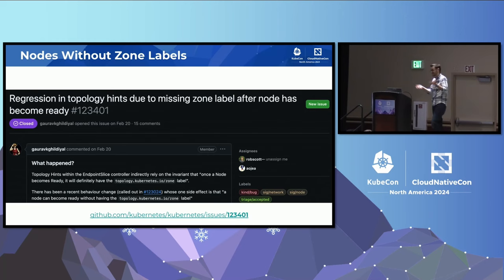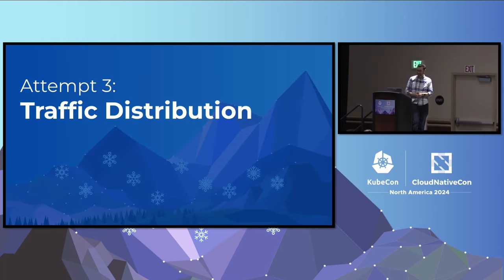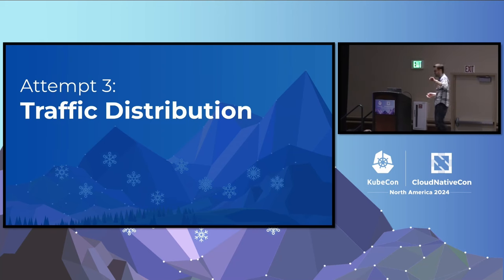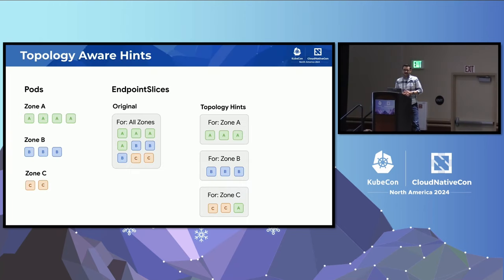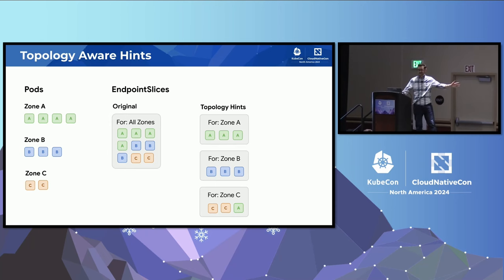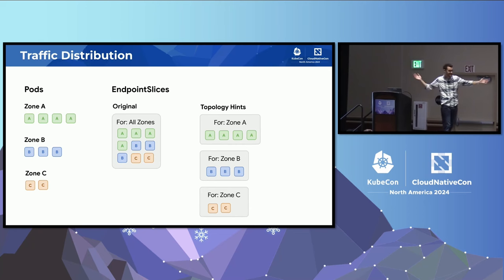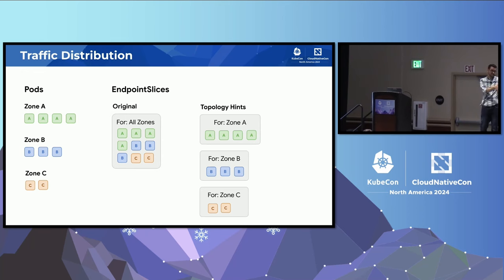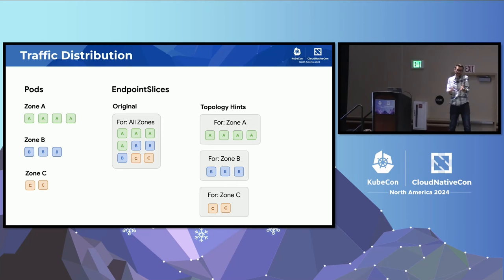Any time you have a new node come up without a zone label in some edge cases, all your topology-aware routing just stops working and it sprays everywhere — very confusing. So we finally made it to attempt three: traffic distribution. I have to give credit where it's due — Garov really picked this up and turned it into a reality. At this point, with topology-aware hints we were moving that extra endpoint from Zone A to Zone C. With traffic distribution, we just give up on all of that and say you're on your own — we trust you to have enough endpoints in every zone, and we simply route traffic to a local endpoint if any exists.